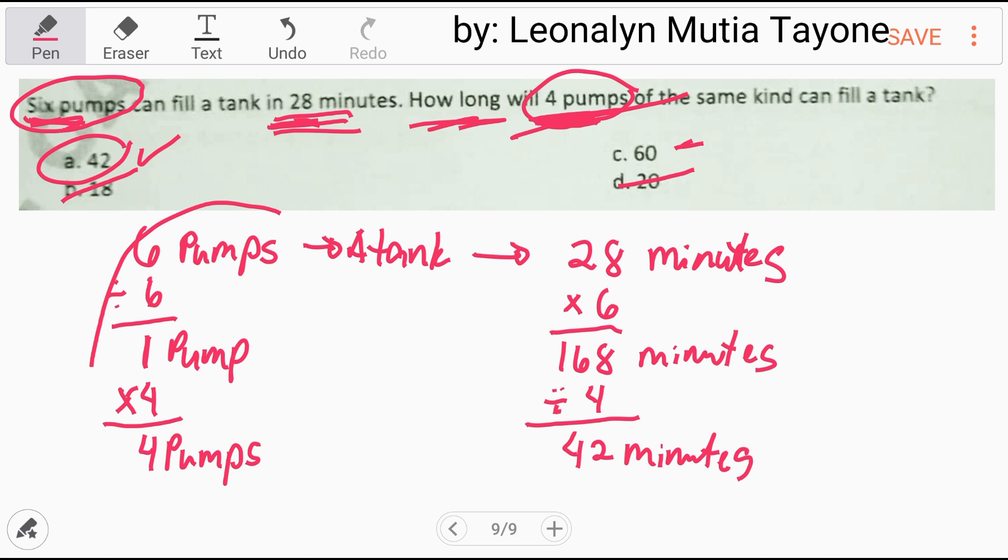Kasi ito yung workers natin. Ito yung time natin. More workers, lesser na yung time. Lesser yung worker, mas more yung time na makukonsume. So anyway, ang sagot dito ay 42. Depende na sa inyo kung saan doon ang susundin nyo, yung solution number one ba natin, yung solution two, or ito.